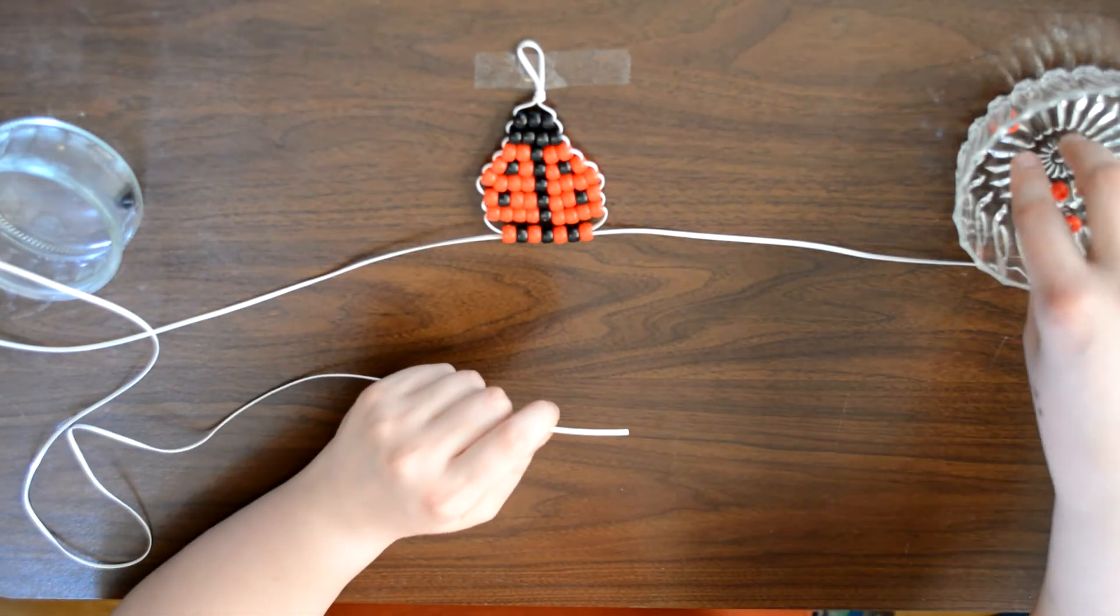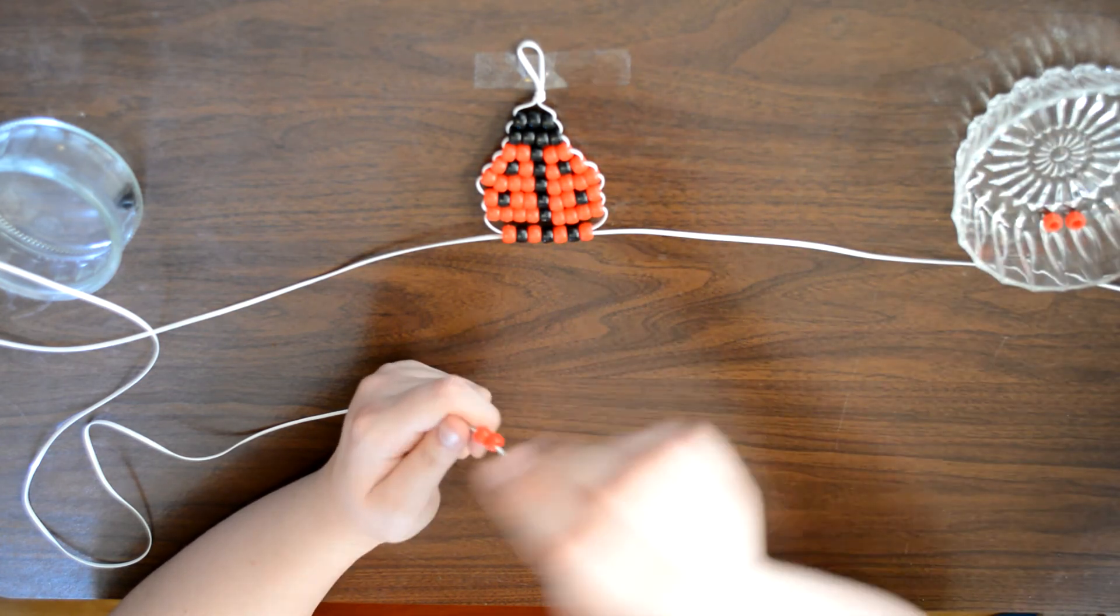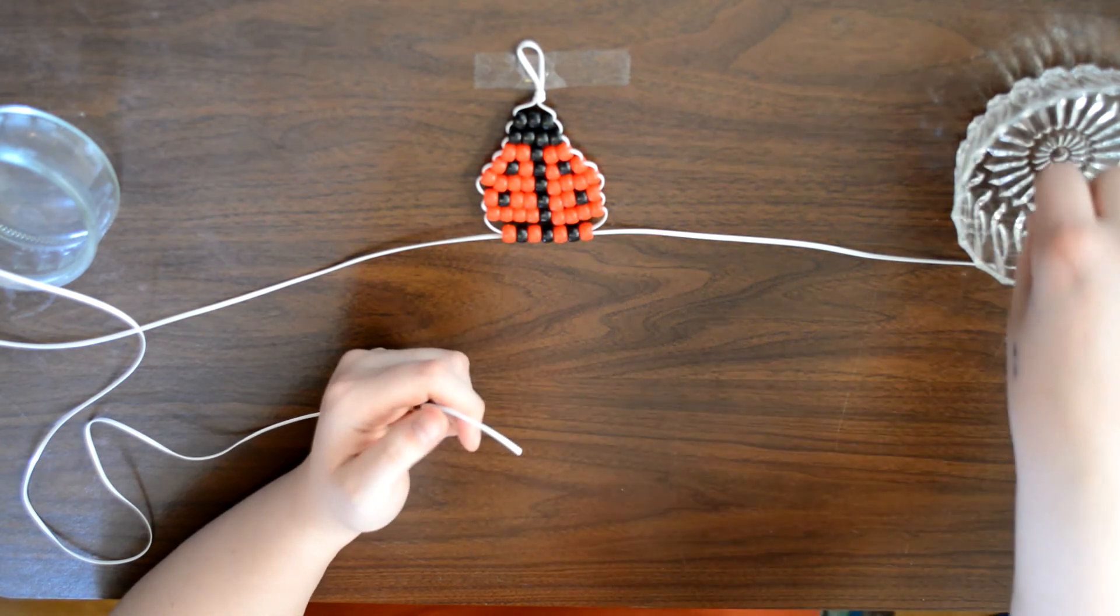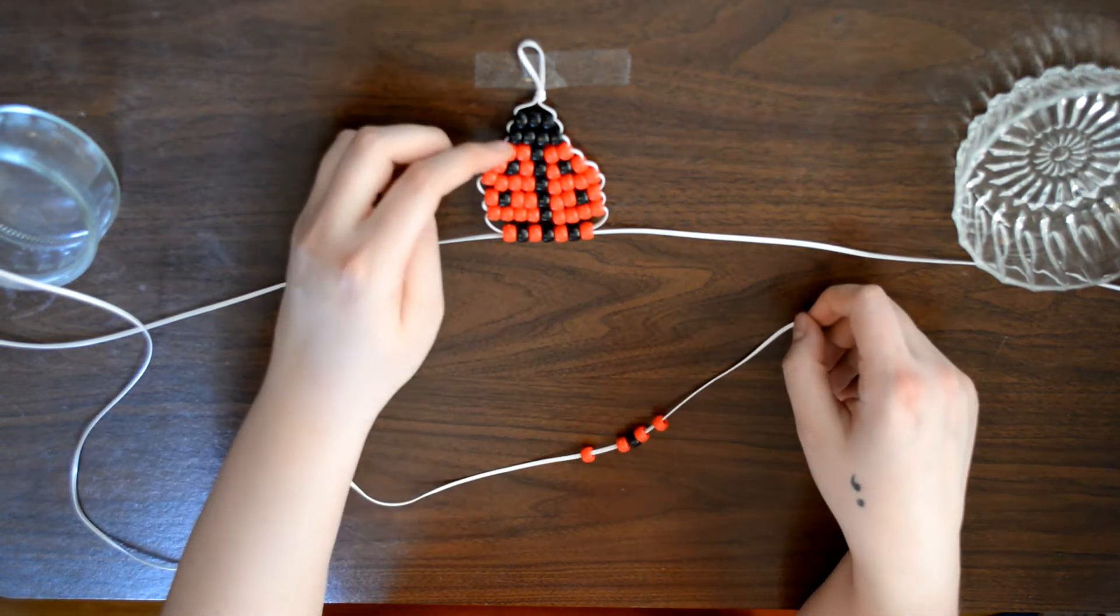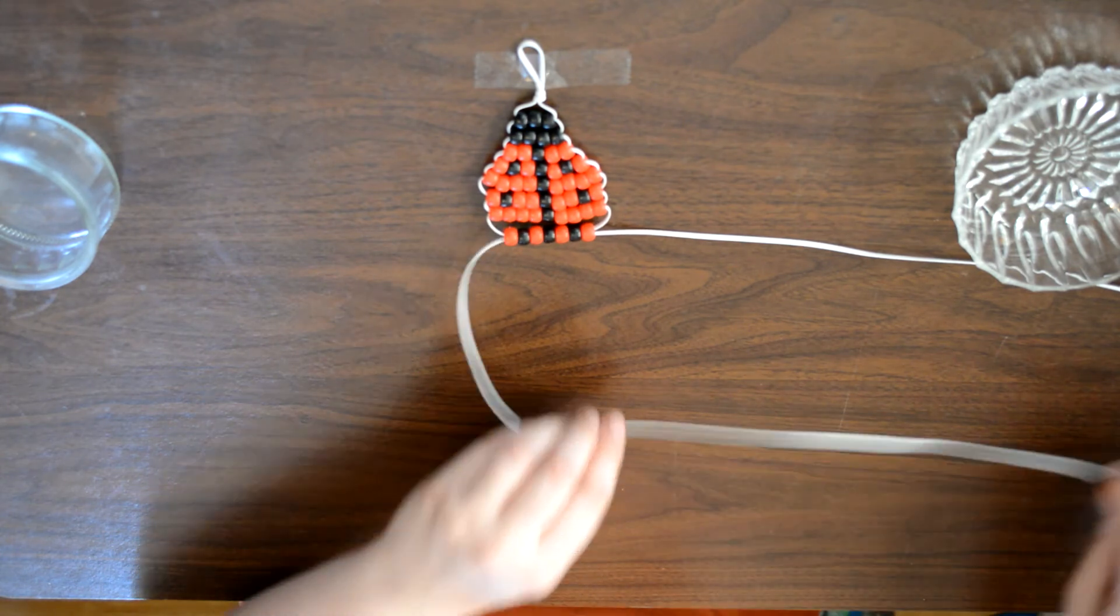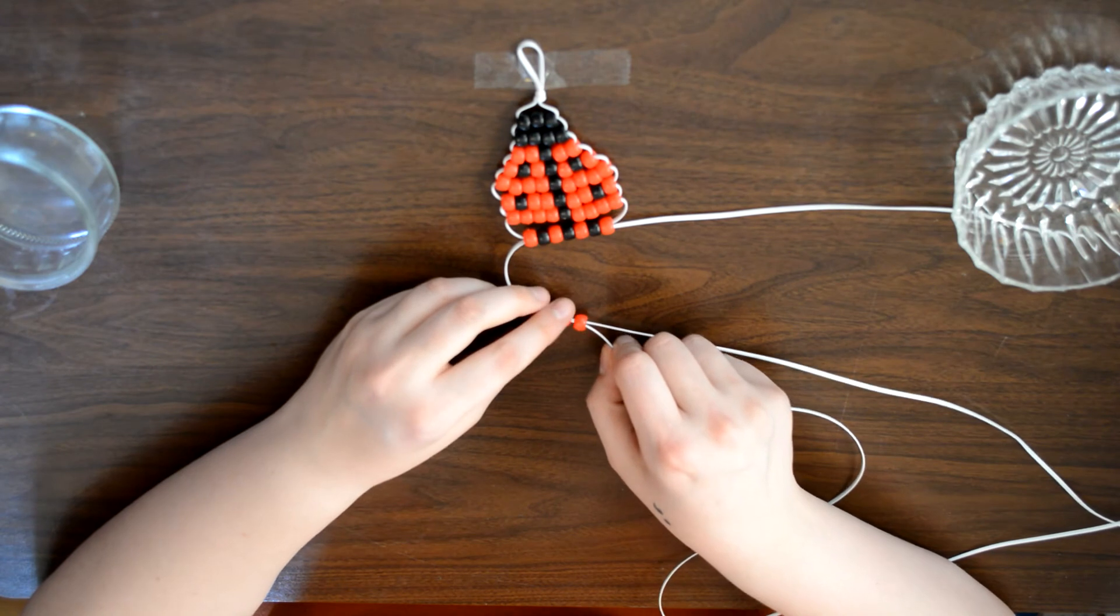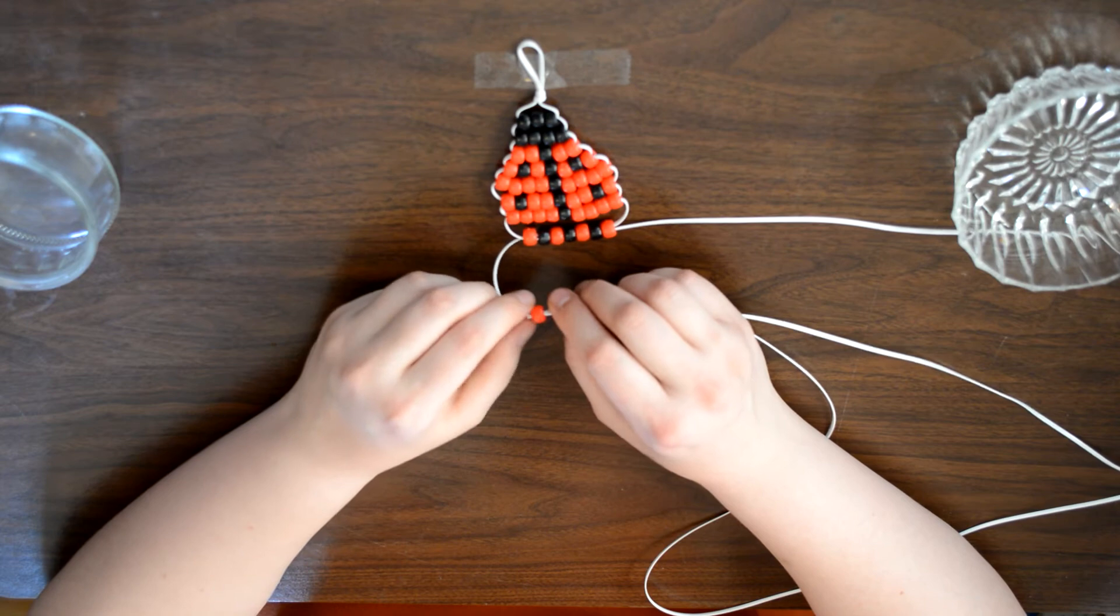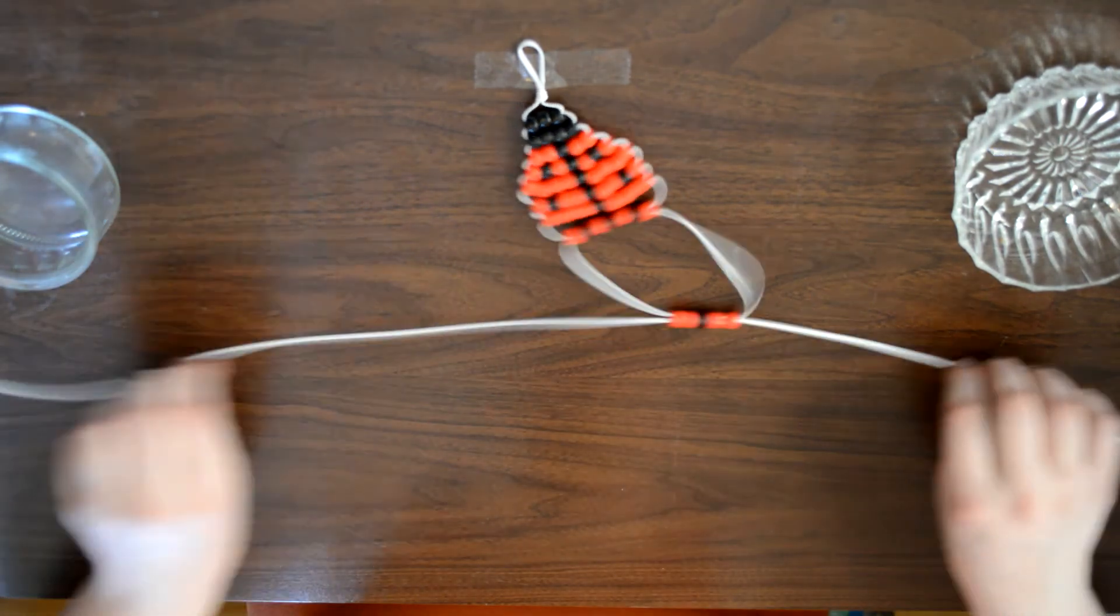This row is two red, one black, and two red. Just like this row right here. And then take our right side back through all those beads. And pull both sides.